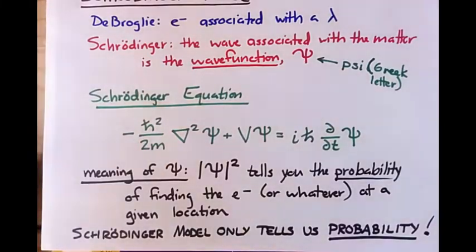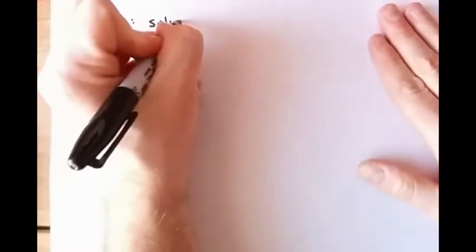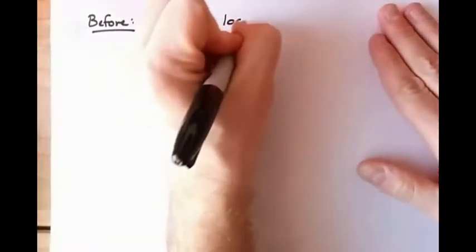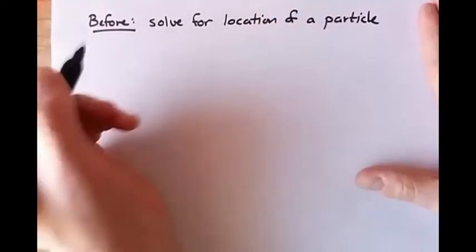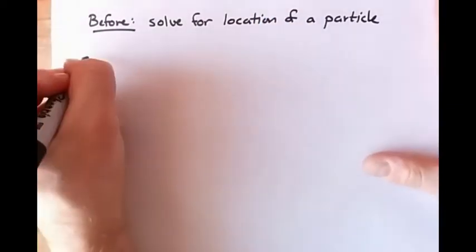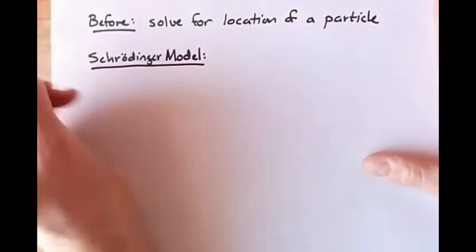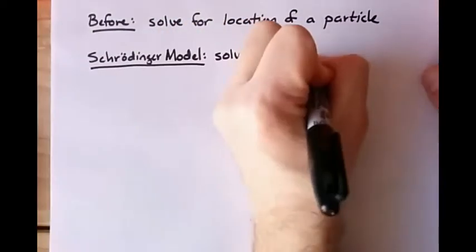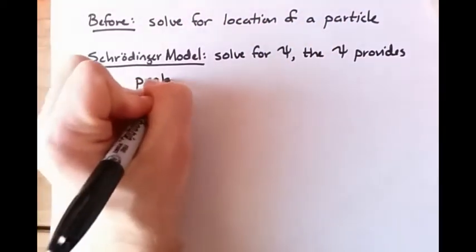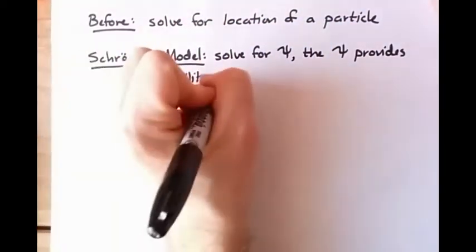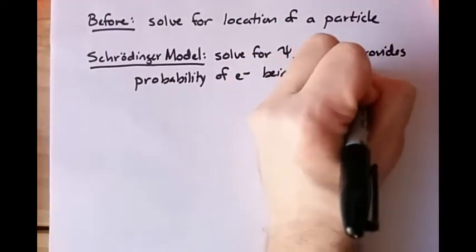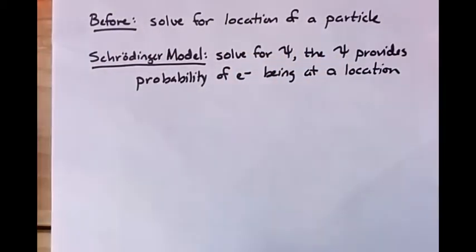That's a shift from everything we've seen since Newton — before, we used to solve for the location of an electron using kinematic equations. In the Schrödinger model, you cannot do that. All you can do is solve for the wave function, and the wave function tells you the probability of finding an electron at a given location.